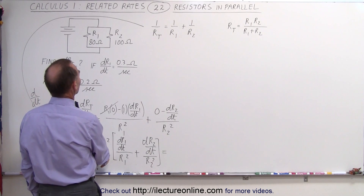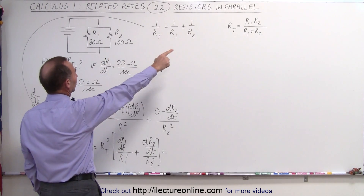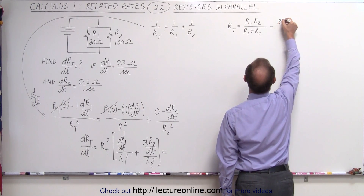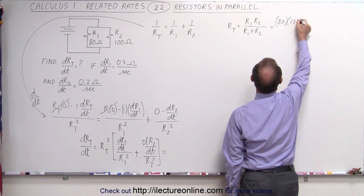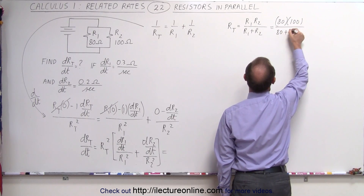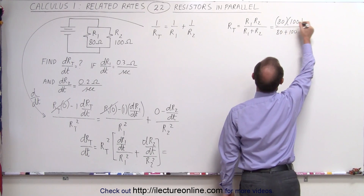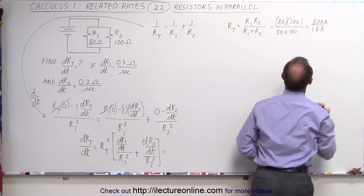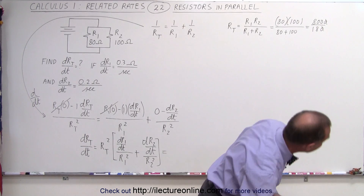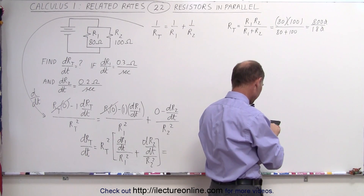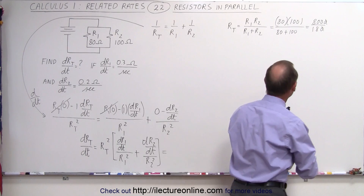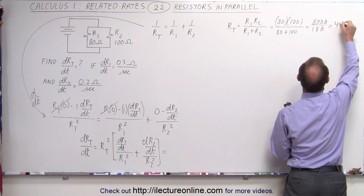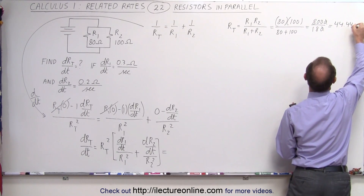First, we need the total resistance. Using the product-over-sum rule: R_total equals 80 times 100 divided by 80 plus 100, which is 8,000 divided by 180, or 800 divided by 18, giving approximately 44.44 ohms.